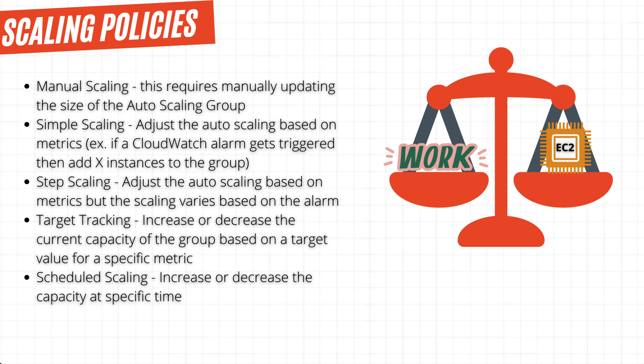There's also simple scaling, which is simple in nature because we define a rule based on a metric. For example, if our CPU utilization hits above 75%, then we can adjust the desired capacity by adding one. With the same token, if our CPU utilization hits below 30%, then we can adjust the desired capacity by subtracting one. The key to understanding simple scaling is that it takes an action based on a metric.